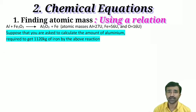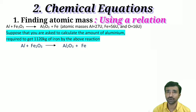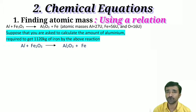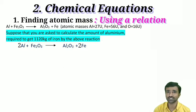First, check if the equation satisfies the law of conservation of mass — that is, whether it is a balanced or skeletal equation. The given equation is a skeletal equation because the number of atoms before and after the reaction are different. For aluminum, LHS is 1 and RHS is 2, so put 2 before Al and 2 before Fe. The balanced equation becomes: 2Al + Fe₂O₃ → Al₂O₃ + 2Fe.